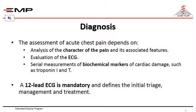The assessment of acute chest pain depends on, first and foremost, the analysis of the character of the pain and its associated features, evaluation of the electrocardiogram, and serial measurements of biochemical markers of cardiac damage such as troponin I and T. A 12-lead electrocardiogram is mandatory and defines the initial triage.